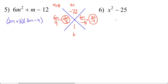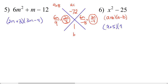This last question, number 6, is one of the special products. We have x squared minus 25. Notice there are only two terms separated by a minus sign. Also, x squared is a perfect square and 25 is a perfect square. This is called a difference of squares, and it factors to a plus b times a minus b. The square root of x squared is x, and the square root of 25 is 5. So this is going to be x plus 5 times x minus 5. That's our answer.